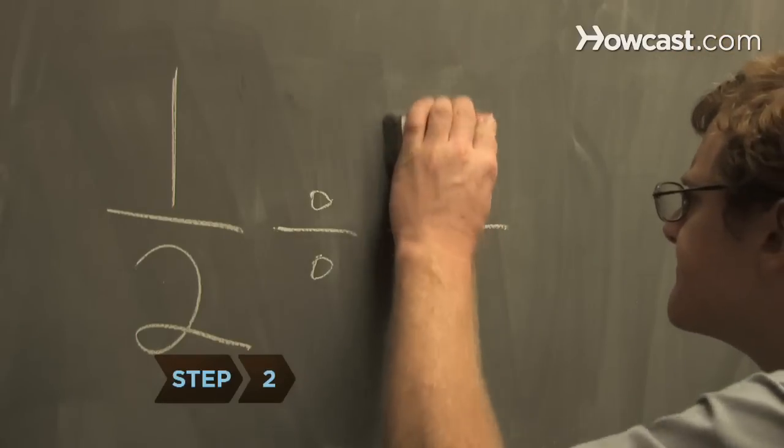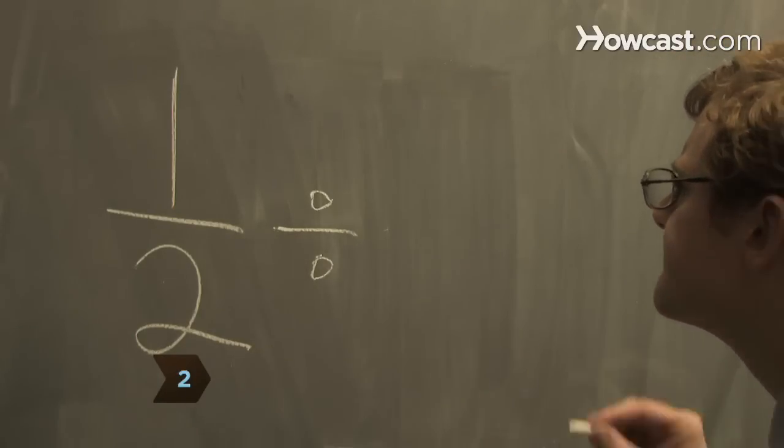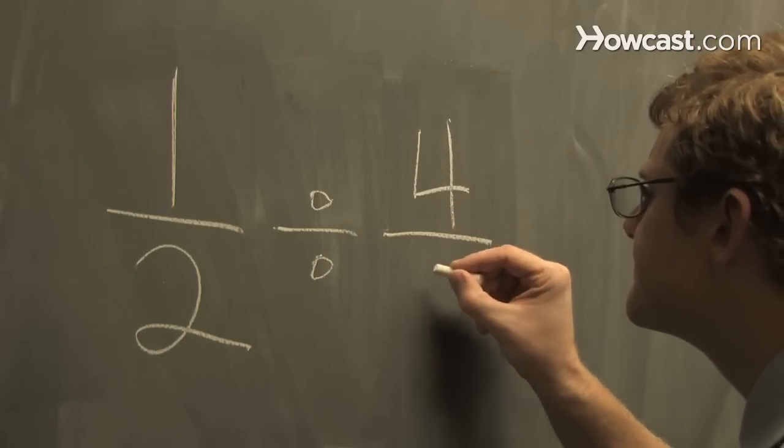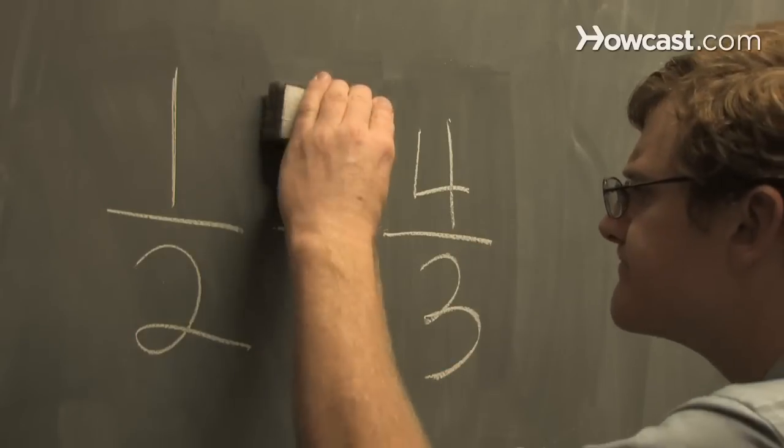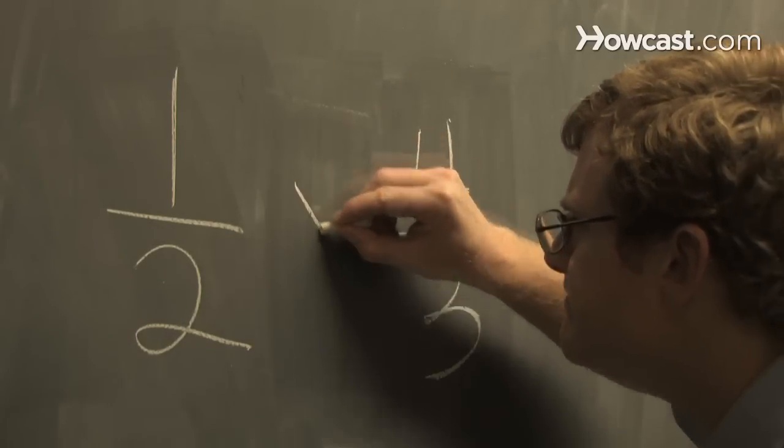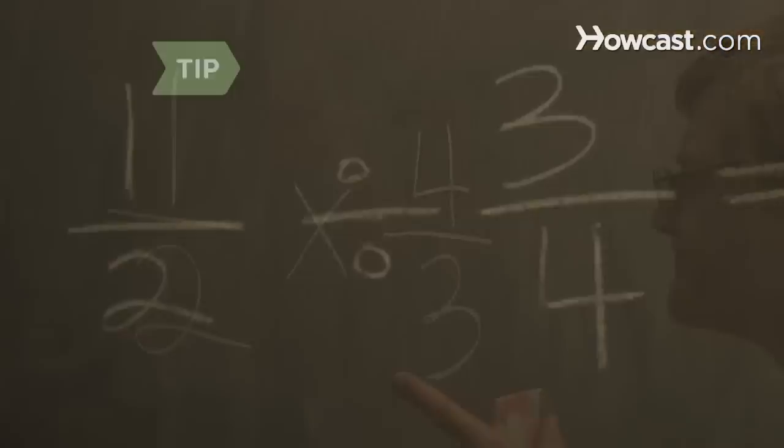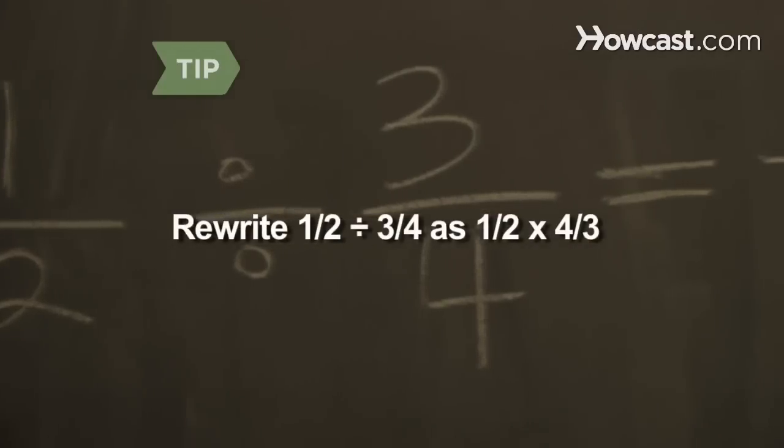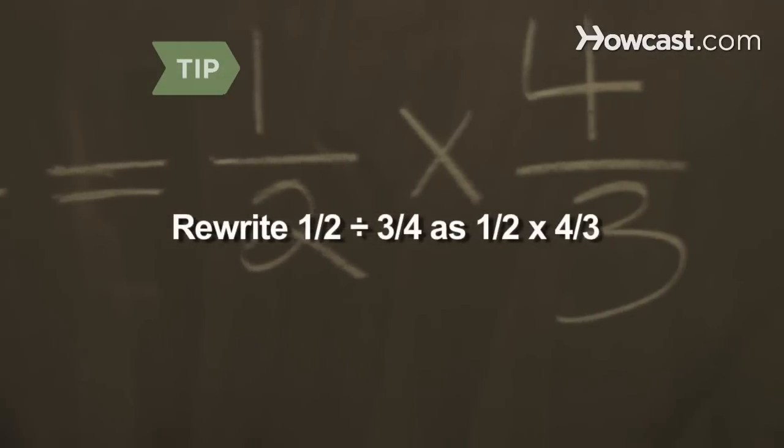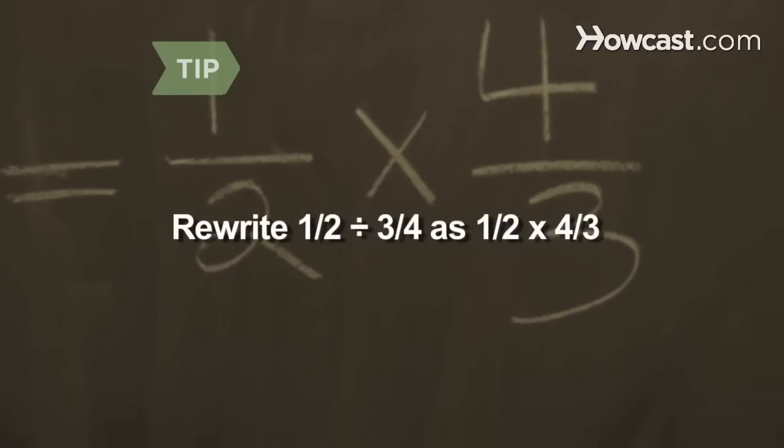Step 2: Invert the second fraction by flipping it so that the bottom number is at the top. Rewrite the problem with the first fraction multiplied by the second, now inverted, fraction. For example, rewrite 1/2 divided by 3/4 as 1/2 multiplied by 4/3.